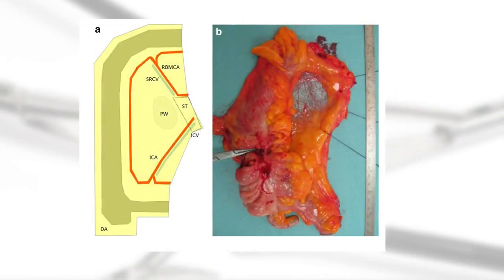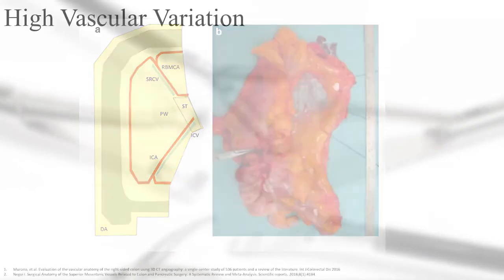The optimal CME specimen has no fascial defects. The stocks of the ileocolic vessels and middle colic vessels are connected by tissue of the surgical trunk, which represents the lymphatic tissue package covering the superior mesenteric vein. Finally, the mesocolic window, or sail as it is also called, has a complete medial flap of mesocolic tissue as shown in the picture.